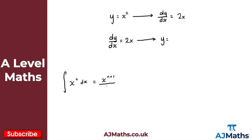And then we divide by n plus 1 — we divide by this new power. So if that was x squared, I'd add 1 to the power to get x cubed, and divide by that new power of 3. With this result, we have something called the constant of integration. The letter we normally use is plus c, but it doesn't actually matter — you can use any letter, though c is what you'll typically see in textbooks and exam papers.